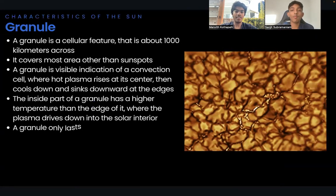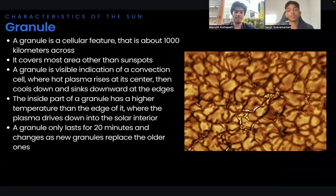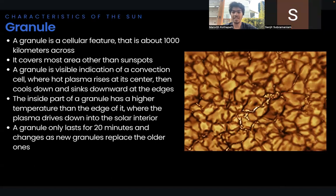First let's talk about granules. A granule is a small cellular feature, about a thousand kilometers across, that covers the entire sun except for those areas covered by sunspots. A granule is the visible signature of a convection cell, where hot plasma rises at its center and then cools down and sinks downward at the edges. A granule has a higher temperature and brightness than the surrounding intergranule region, the edge of the granule.